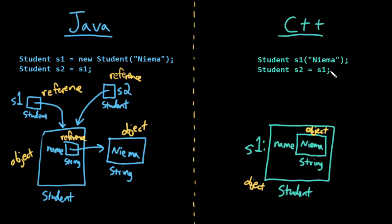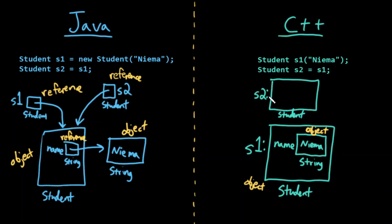Let's run that second line of code in C++ though. In C++, what this is doing is actually creating a copy of S1 and making that new object be called S2. So when I'm doing this assignment, I'm actually creating a brand new, completely different student object called S2, and it's a copy of S1 — so it's going to have a name instance variable, which is a string object storing the name Nima.